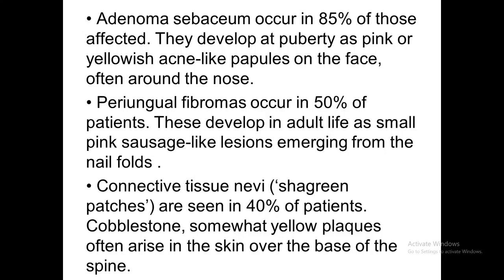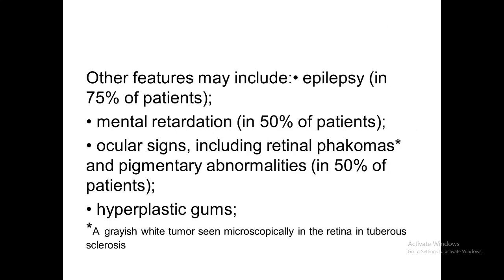Connective tissue nevi, also called shagreen patches, are seen on the lower back in less than half of patients. Their surface resembles cobblestones and they are yellowish in color. Other features of tuberous sclerosis include epilepsy in more than 75%, mental retardation in 50%, ocular signs including retinal hamartomas, pigmentary abnormalities in 50%, and hyperplastic hypertrophied gums.